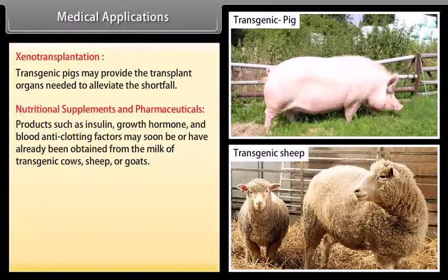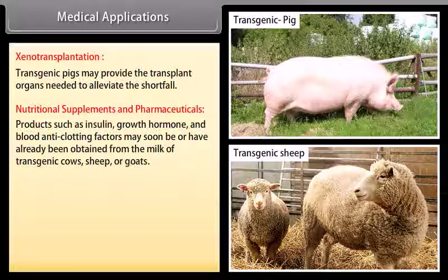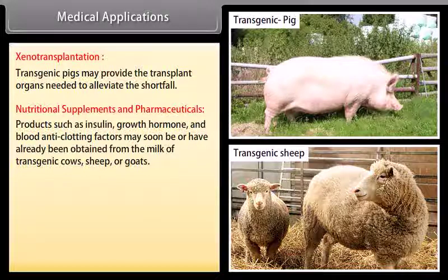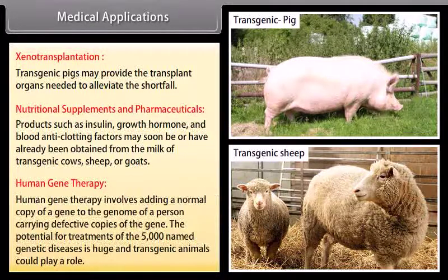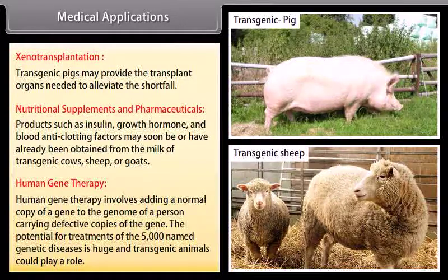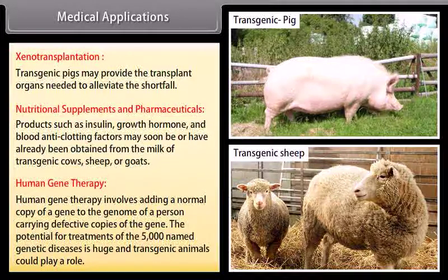Products such as insulin, growth hormone, and blood anti-clotting factors may soon be, or have already been, obtained from the milk of transgenic cows, sheep, or goats. Human gene therapy involves adding a normal copy of a gene to the genome of a person carrying defective copies. The potential for treatment of the 5,000 named genetic diseases is huge, and transgenic animals could play a role.